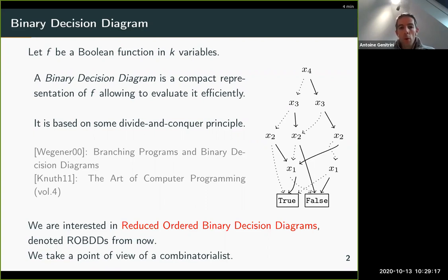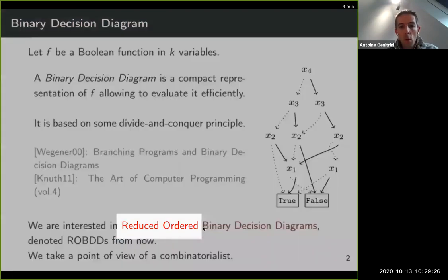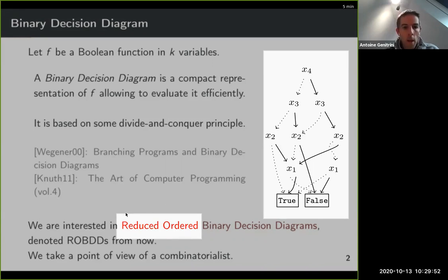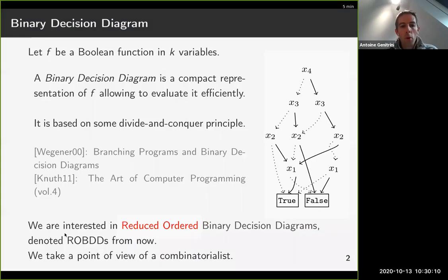In this talk, I am interested in a specific subclass: reduced ordered binary decision diagrams. Ordered means that on any path from root to leaf, the variables are always met in the same order. In my example, I start from x4 and end at x1 in decreasing order of index. Reduced means there are no two occurrences of the same substructure. I will use the notation ROBDD for this structure.